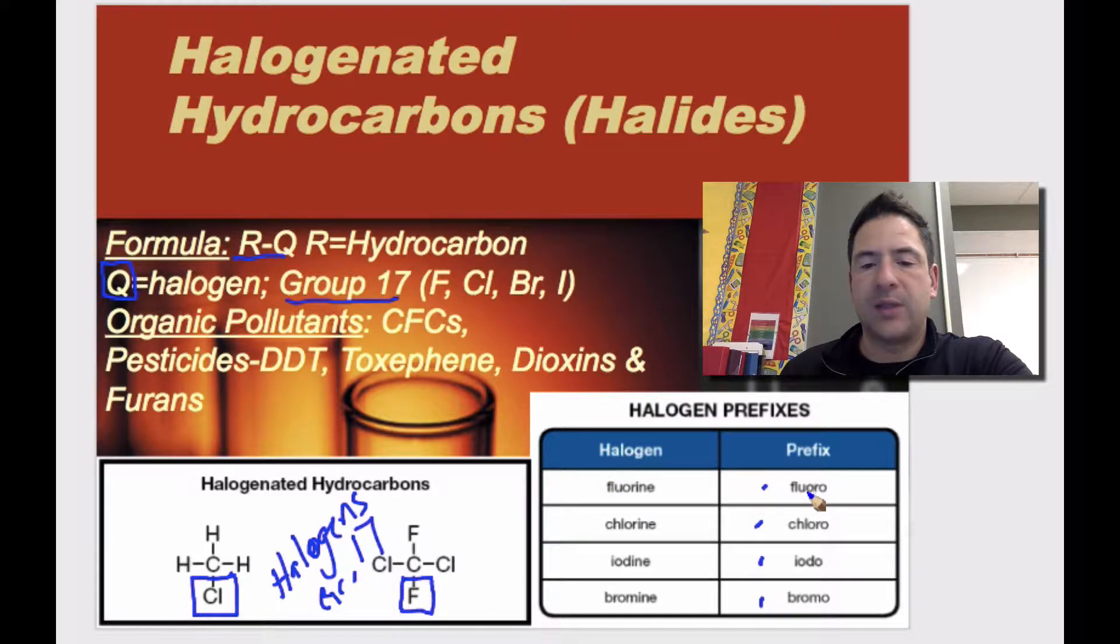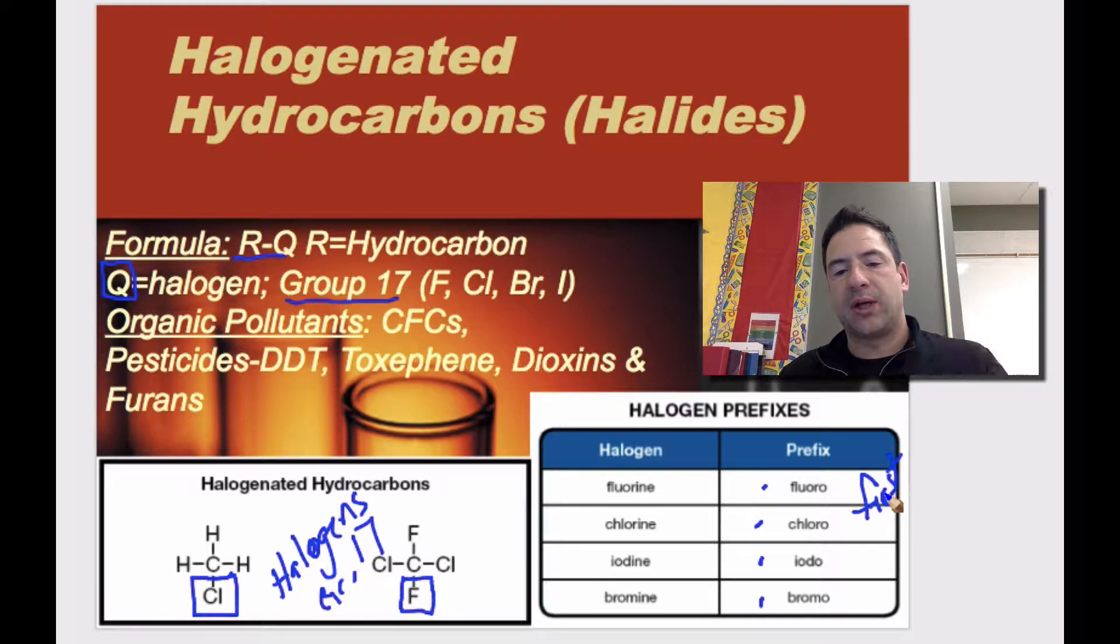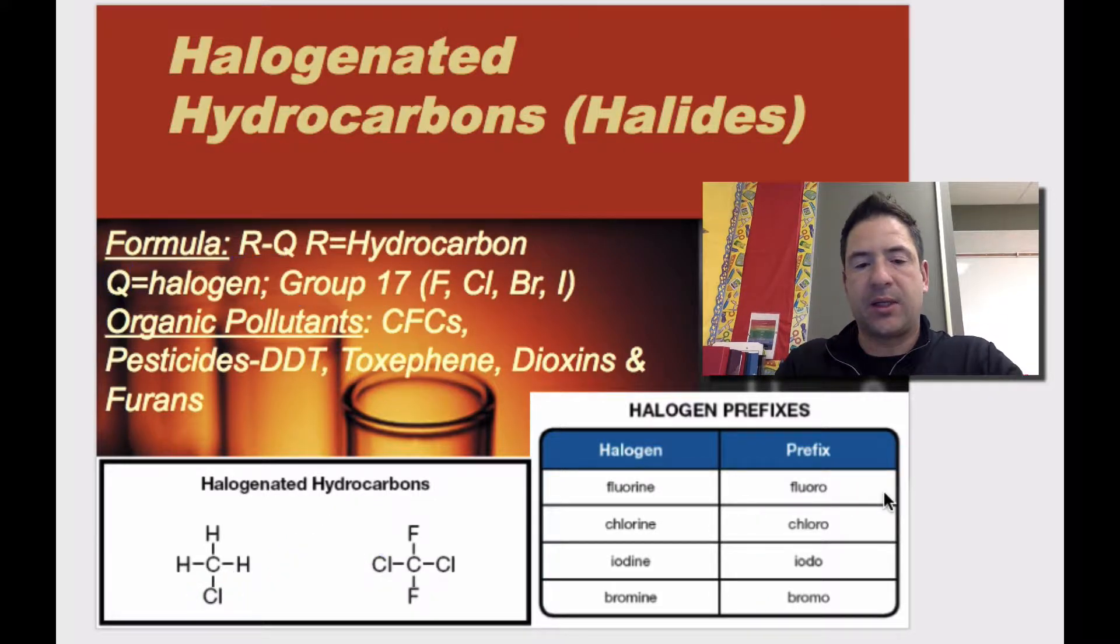Fluorine is known as fluoro, chlorine is known as chloro, iodine is known as iodo, and bromine is known as bromo. And that is going to be named first. So when we name it, we're going to have to put those at the beginning of the halogenated hydrocarbon.